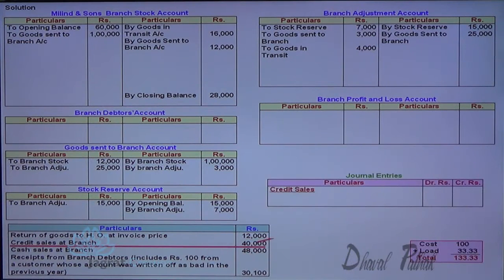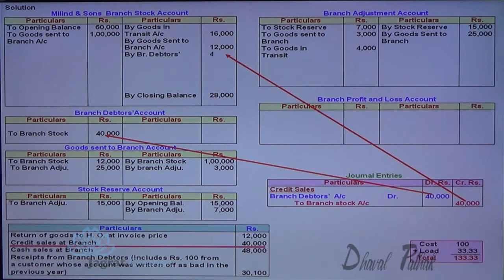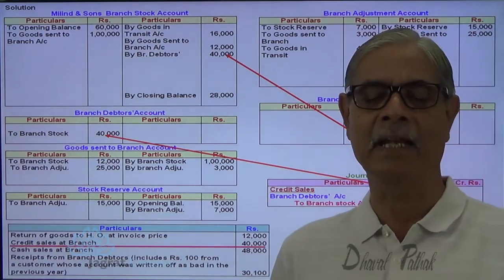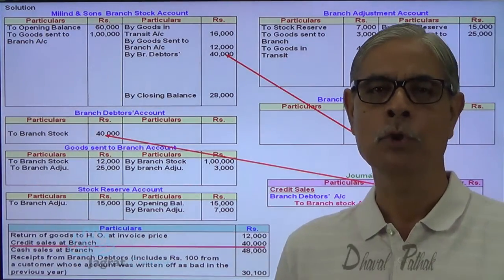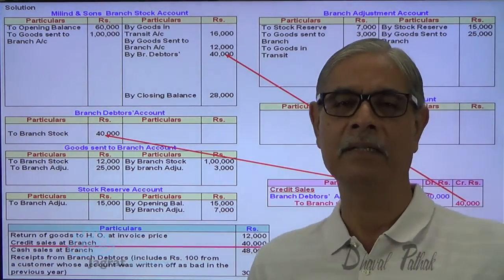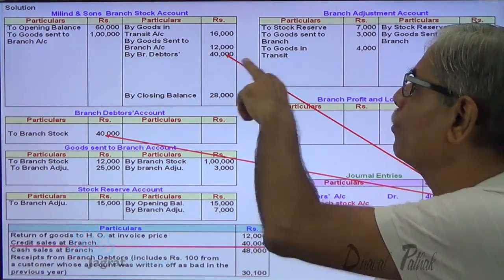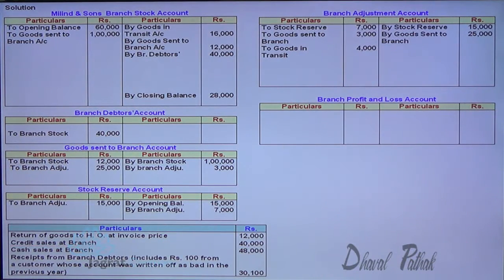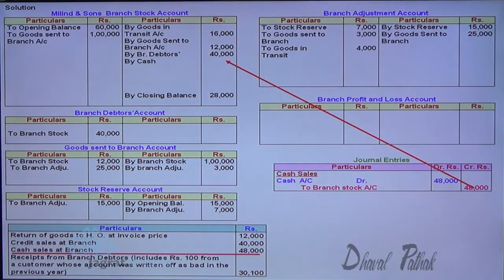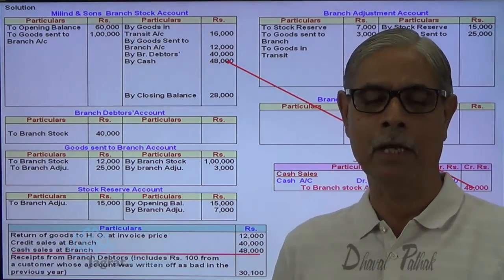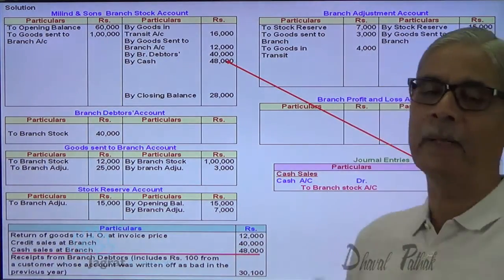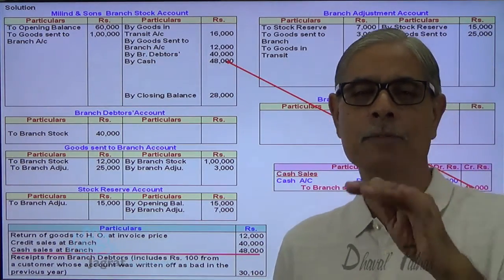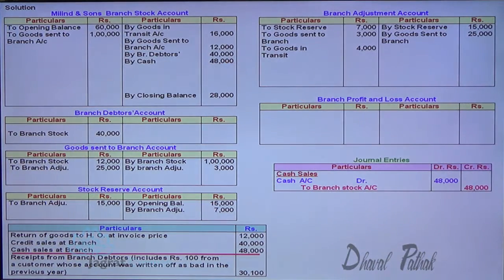Credit sales: branch debtors account debit, branch stock account credit. Cash sales: cash account debit, branch stock account credit. No adjustment entries are recorded for these sales because when goods are sold, the profit is realized. By not debiting the adjustment account with the profit element in sales, the gross profit will be reported as the difference in the branch adjustment account.